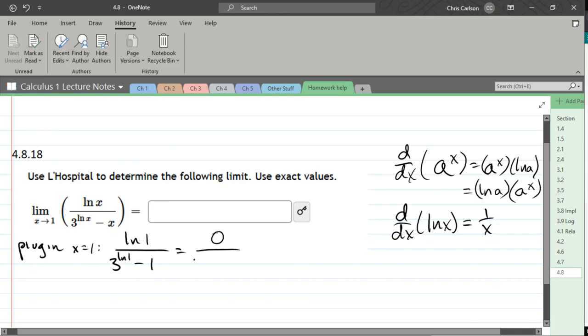Now you need to remember ln of 1 is 0. And so it appears twice, so that's also 3 to the 0 minus 1. Now 3 to the 0 is also 1. So we've got 0 over 1 minus 1, which is 0 over 0.